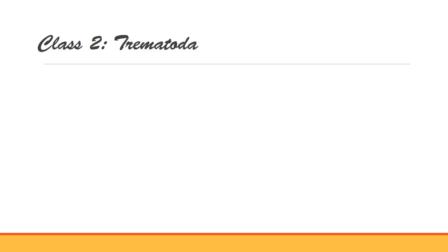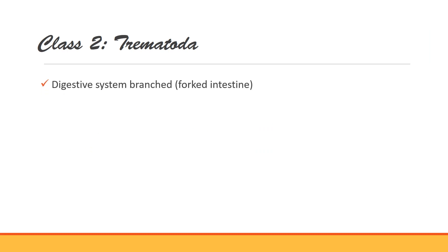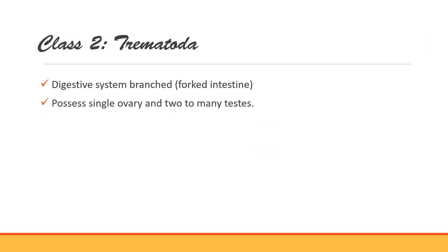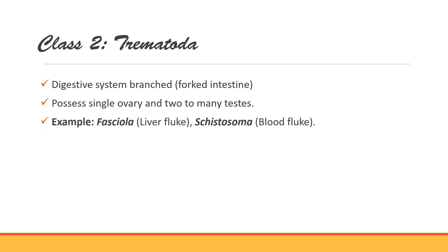Class 2 is Trematoda. Organisms of this class have a branched or forked digestive tract. These organisms are hermaphrodite — male and female sex organs are present in the same individual. Examples include Fasciola, commonly known as liver fluke, and Schistosoma, commonly known as blood fluke.